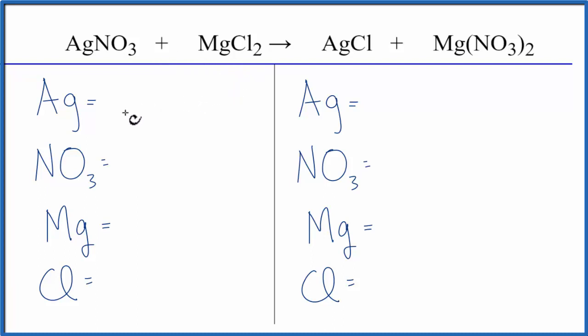Let's count the atoms on both sides of the equation. We have one silver, and then this NO3 is a polyatomic ion called the nitrate ion. Because I have a nitrate ion here and then I have nitrate ions here, I'm going to count it as just one thing. It stays together in the chemical reaction. So I have one nitrate, I have one magnesium,